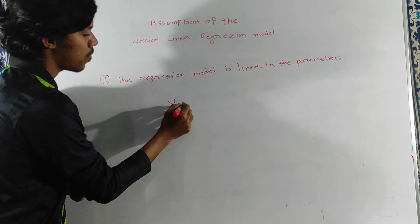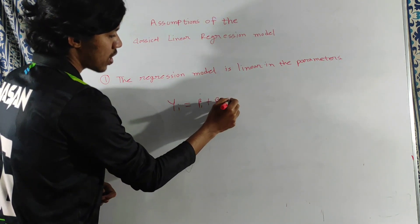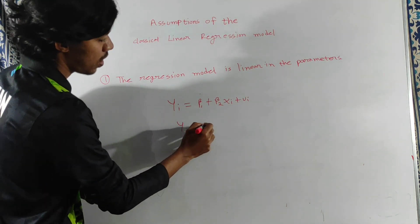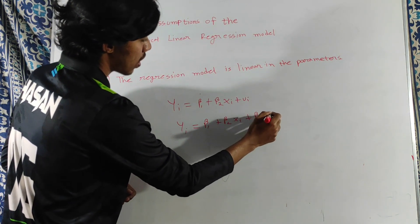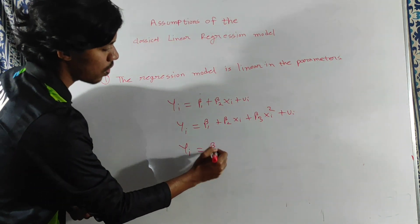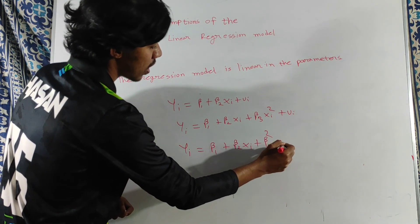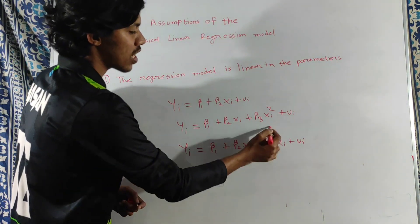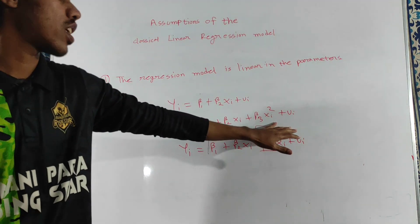For example, the model y = beta1 + beta2*Xi + u is linear in parameters. Another model: y = beta1 + beta2*Xi + beta3*Xi-squared + u is also linear in parameters. However, y = beta1 + beta2-squared*Xi + u is not linear in parameters, so it violates the assumption.